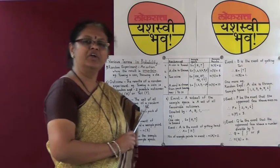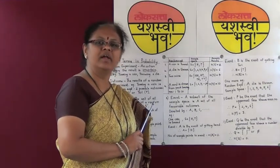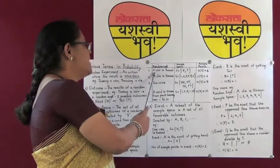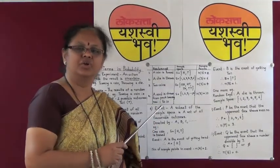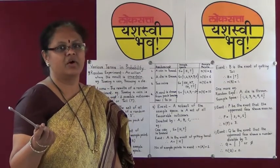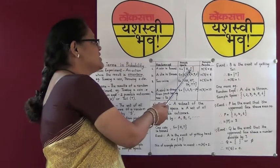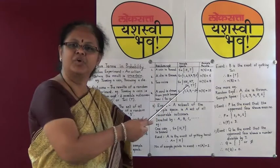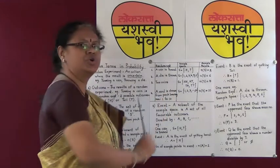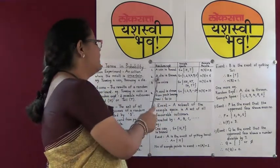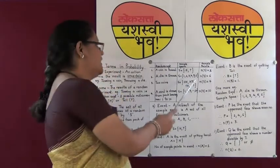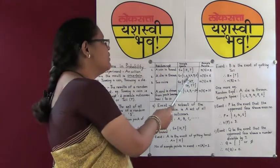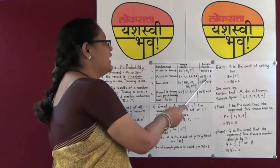Let us take one example to find the sample space and count the number of sample points. First random experiment: a coin is tossed. The sample points in the sample space would be head or tail, so n(S) = 2. One more example: a die is thrown. The possible points will be 1, 2, 3, 4, 5 and 6. There are 6 sample points, so we write n(S) = 6.